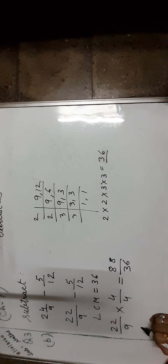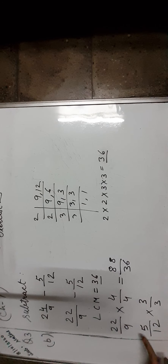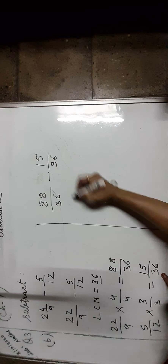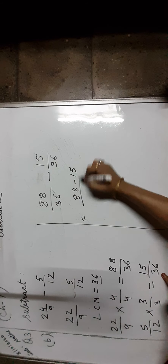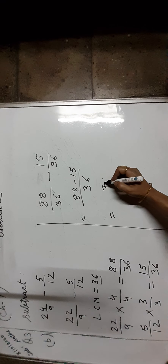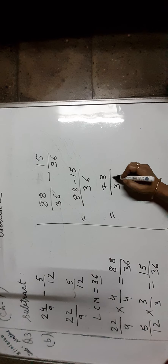Now take another fraction that is 5 upon 12. How much do we multiply? In 12 to get 36 — it is 3 times. So multiply 3 in numerator and denominator, which is equal to 15 upon 36. Now subtract the fractions: 88 upon 36 minus 15 upon 36, which is equal to 88 minus 15 upon 36, which is equal to 73 upon 36. It should be written as 2 and 1 upon 36.